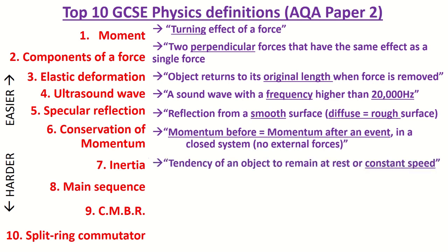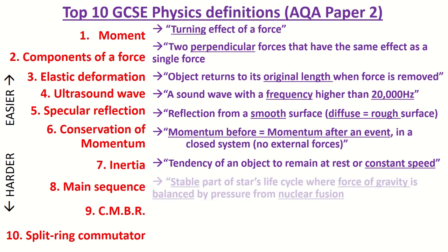Inertia is the tendency of an object to remain at rest or at a constant speed. If it's got a higher inertial mass, it means it's harder to change its velocity.